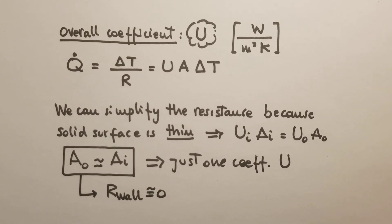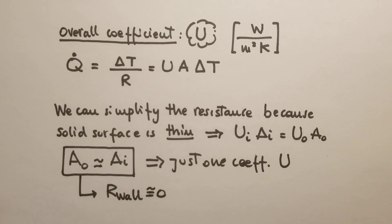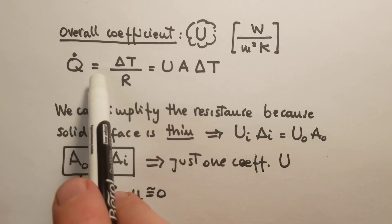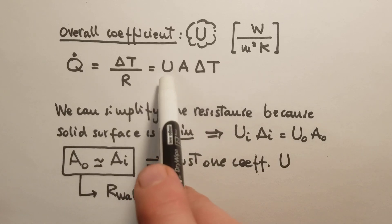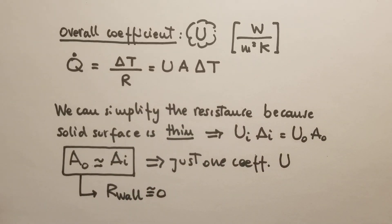The overall coefficient of heat transfer, usually called U, is defined by Q dot equals delta T divided by R, which equals U A delta T. In general, there are two U's: Ui referring to the internal fluid and U0 referring to the outer fluid. But usually the solid wall is very thin, so A0 can be well approximated by Ai, and therefore we can just define one overall heat transfer coefficient U because the resistance due to conduction can be neglected.